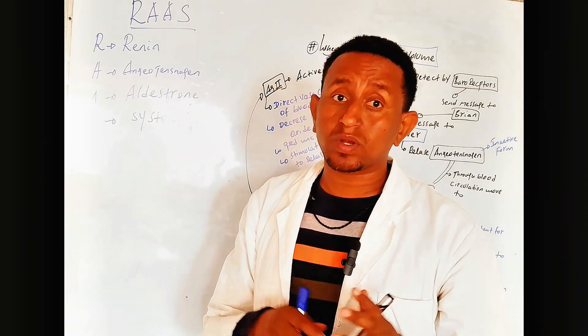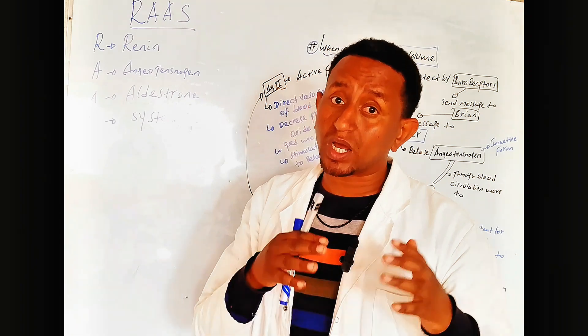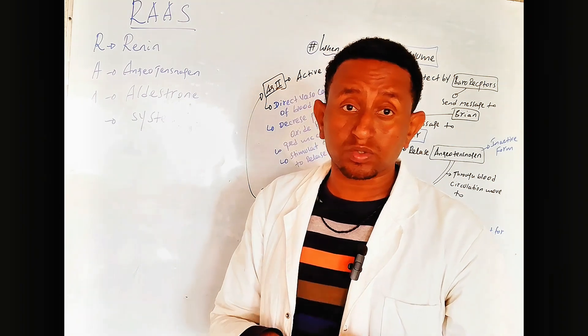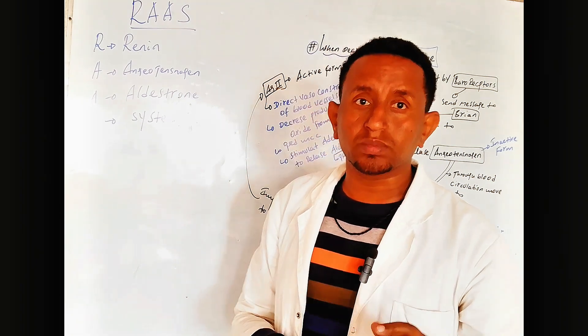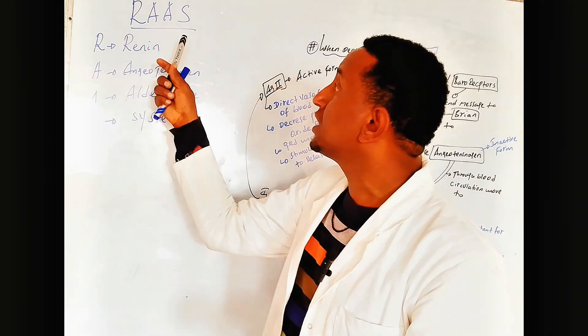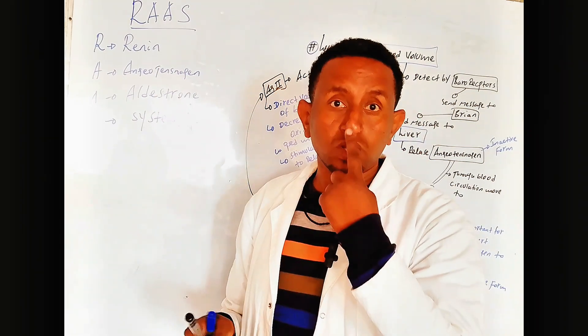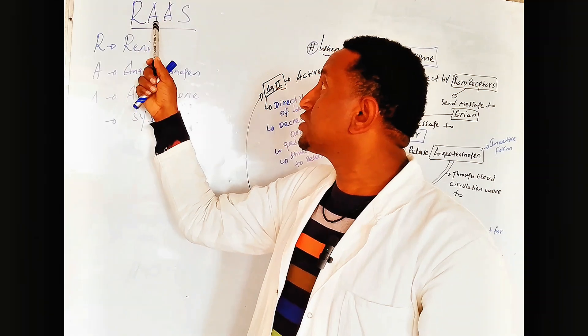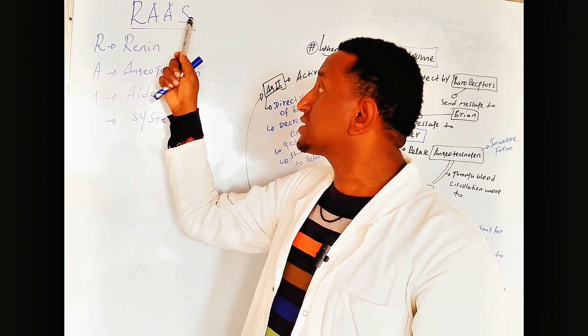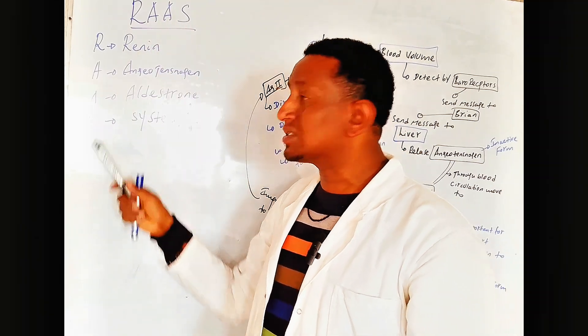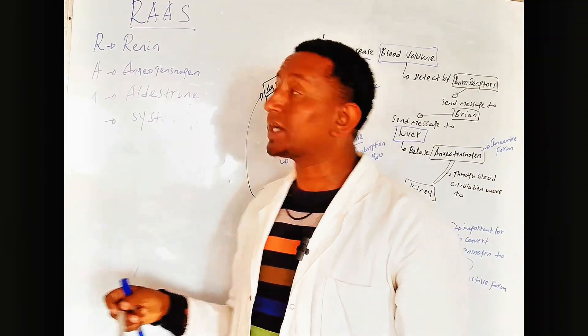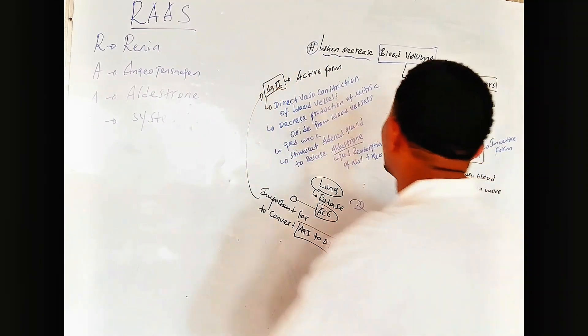With cardiovascular pharmacology, cardiovascular anatomy and physiology, the Renin-Angiotensinogen-Aldosterone System is very very important.